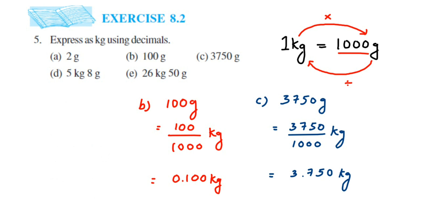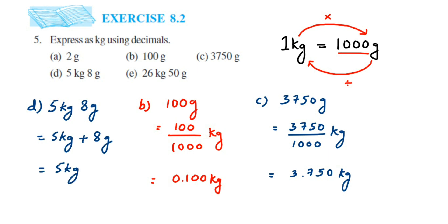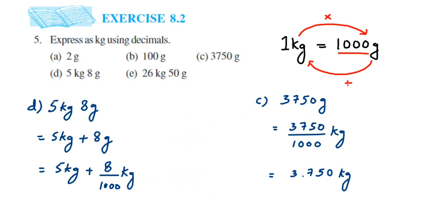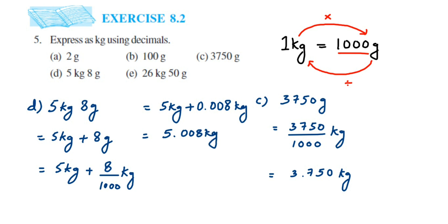Problem D is a bit different: we have 5 kg and 8 grams. Treat this as 5 kg plus 8 grams, and convert only the grams part. So 8 grams divided by 1000 equals 0.008 kg — only one digit, so pad with zeros: 800, decimal three places from the right gives 0.008. Adding: 5 kg plus 0.008 kg equals 5.008 kg.